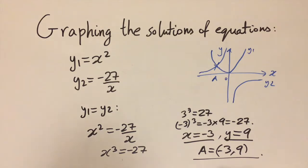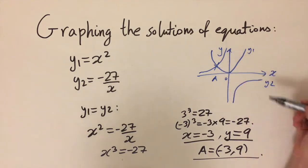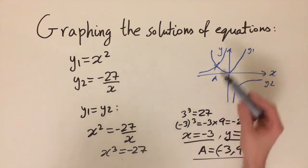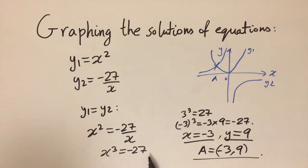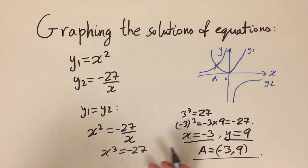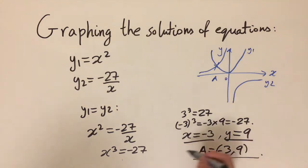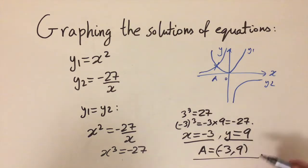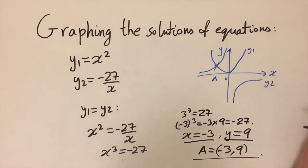Sketching is so powerful because it tells us there's only one solution. Given this cubic equation, without the sketch you might guess two or three solutions. But because the graph shows only one intersection, we know once we've found x equals minus 3, there are no more solutions. That's why it's so important to sketch first.